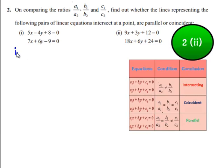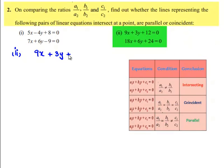Coming to the second bit, the given set of linear equations are 9x plus 3y plus 12 equals 0. This is equation number 1, and 18x plus 6y plus 24 equals 0. This is equation number 2.